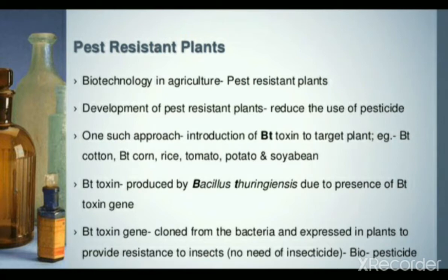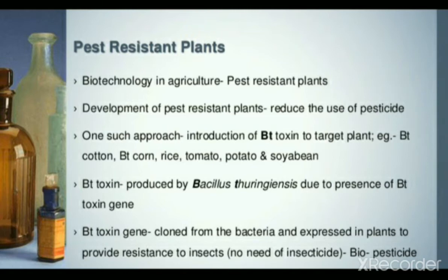Biotechnology in agriculture — production is good but population is growing, so production becomes expensive. First thing is to reduce pesticide use because pesticide has harmful impact on a broad range of plants. This approach introduces BT toxin into target plants. Student, here we form BT crops through biotechnology process. Examples of BT crops are BT corn, rice, tomato, potato, soybean.